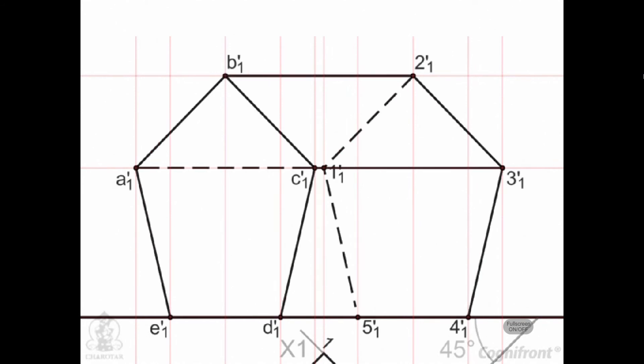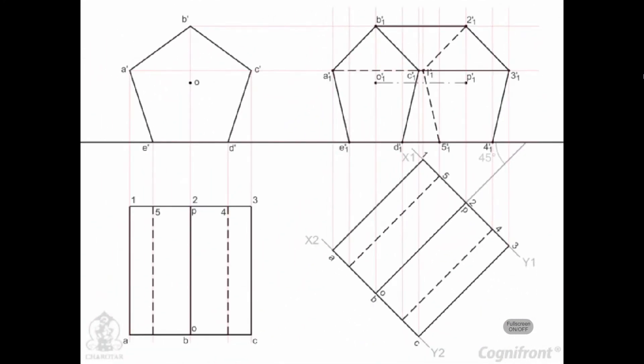Observe the hidden lines are shown as dashed lines coincide with other visible lines. And here we have a complete solution of all the views.